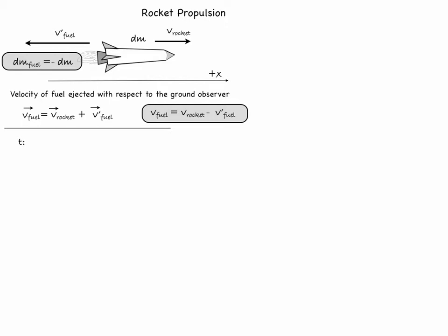Now let us look at what happens with the momentum of the rocket. At time t the momentum is equal to the product of the mass and the velocity of the rocket, or simply mv.